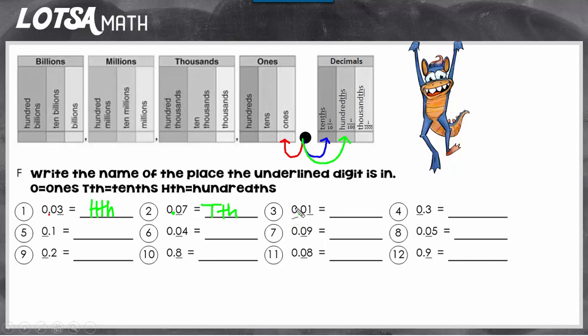To the left is the ones place, to the right is the tenths place, and to the right of that is the hundredths place. So that one is in the hundredths place. Okay, we'll look at one more.